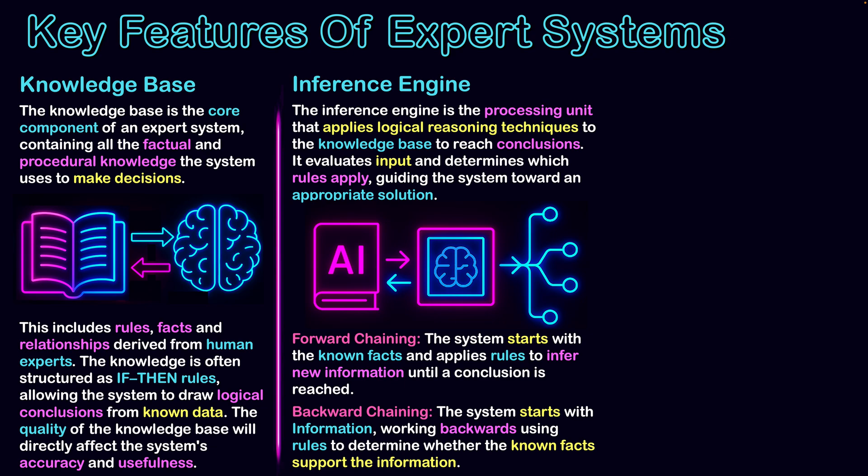We can do this in a variety of ways. The first is forward chaining, where the system starts with known facts and applies rules to infer new information until a conclusion is reached — it looks at facts stored in the knowledge base, processes them, and gives a conclusion. Then there is backward chaining, where the system starts with information and works backwards using its rules to determine whether known facts support that information — more of a verification approach: this could be the answer, let me check the knowledge base, do these correlate? In forward chaining we look at the knowledge base first; in backward chaining we check a proposed solution against ourselves. These would be used in different contexts.